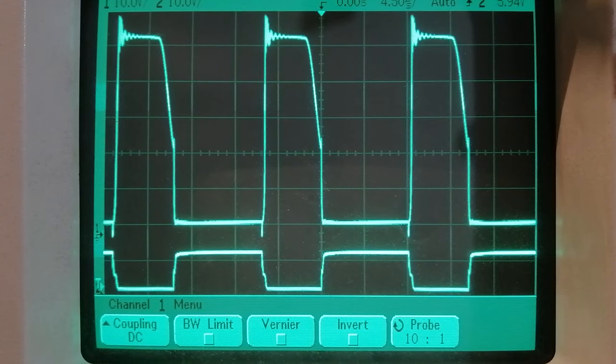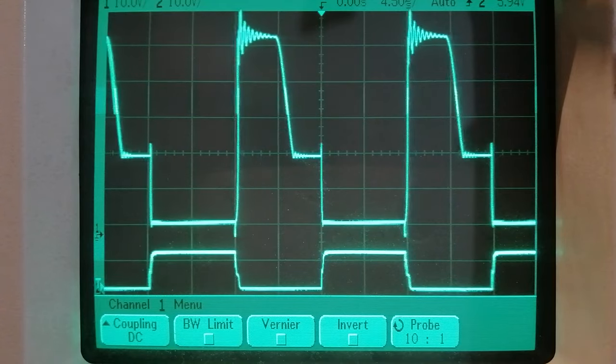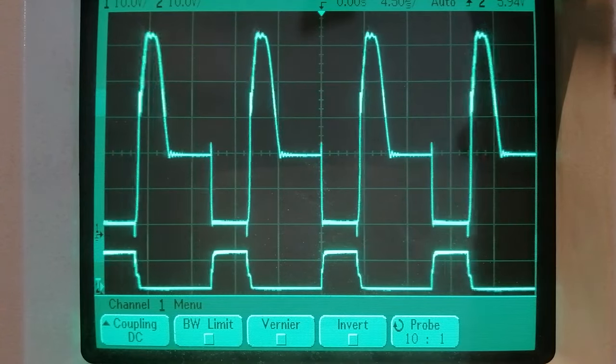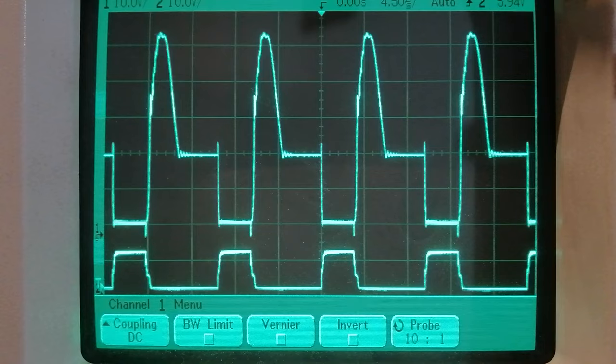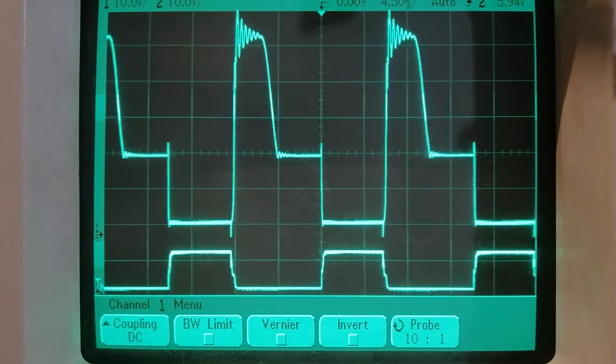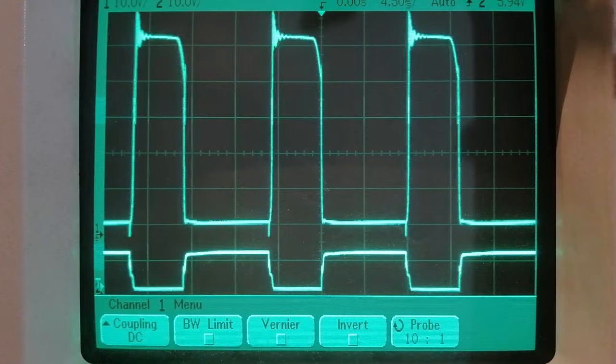And at the bottom we can see the clock as a reference to understand what's happening. And we see that increasing the duty cycle makes the time that the demagnetizing coil has to discharge shorter and at a certain point it doesn't make it in time.